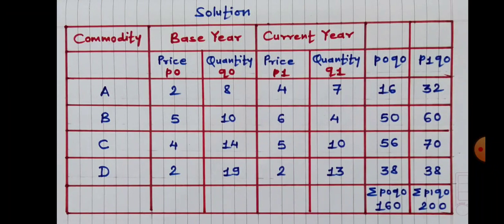P1Q0: 4 into 8 equals 32; 6 into 10 equals 60; 5 into 14 equals 70; 2 into 19 equals 38. After this, we have to find out Sigma P1Q0, which is the summation of P1Q0. It means 32 plus 60 plus 70 plus 38, we get 200. So Sigma P1Q0 is equal to 200.